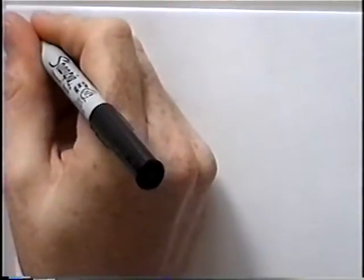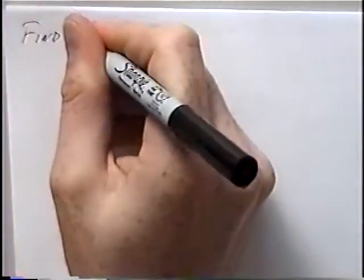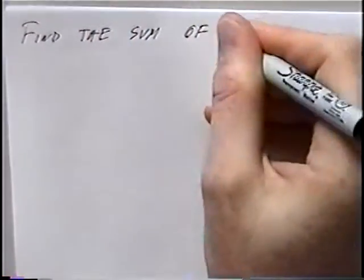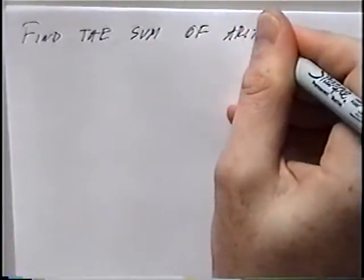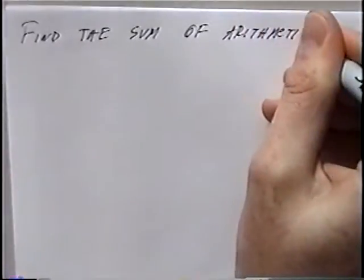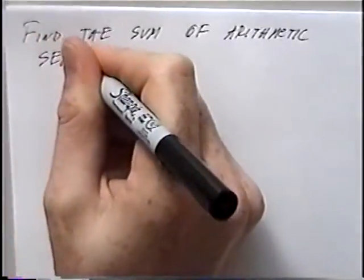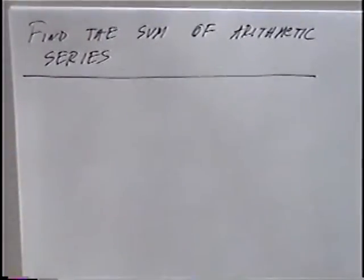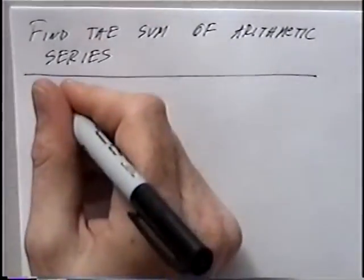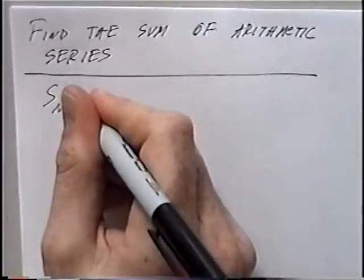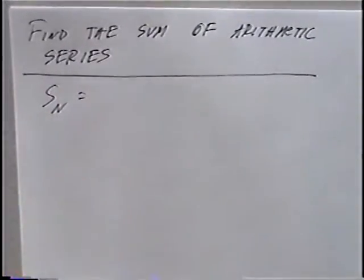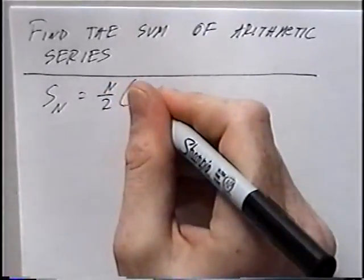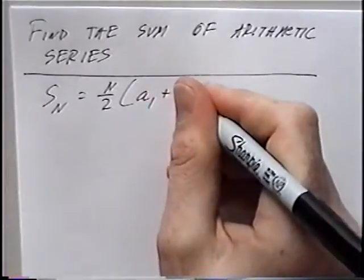The first section of notes today is titled Find the Sum of Arithmetic Series. There are two formulas for this section. S sub n, which stands for the sum of n number of terms in the sequence, is n over 2 times the quantity a sub 1 plus a sub n.